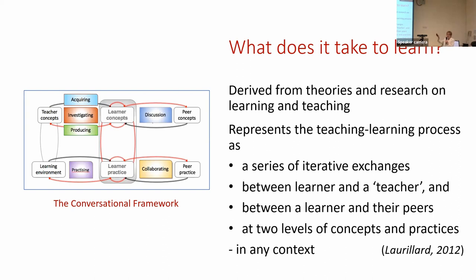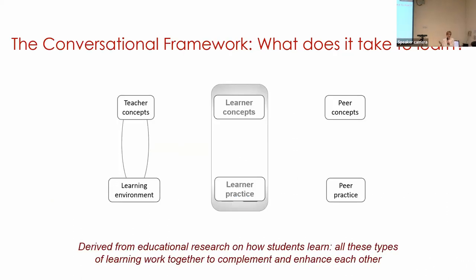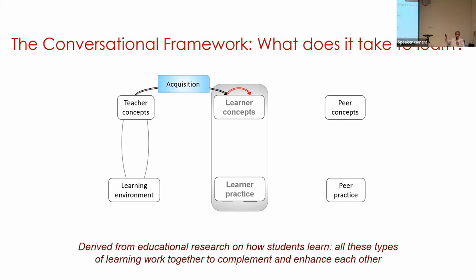As the diagram illustrates, it's essentially a series of iterative exchanges between learner and teacher, and between the learner and their peers, at the two levels of concepts and practices. It works in any context, because all the original studies were done in a variety of different educational contexts. We've got the teacher on one side represented in terms of their concepts and practices, the learner in the middle, interacting with peers on the right. The teacher tries to enable students to understand their concepts, meaning the learner's concepts have to change — the red arrows signify the learner is doing something. That's what learning through acquisition looks like.